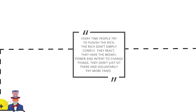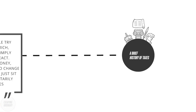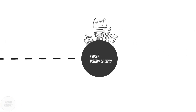A brief history of taxes. Every time people try to punish the rich, the rich don't simply comply — they react. They have the money, power, and intent to change things. They don't just sit there and voluntarily pay more taxes. You may have heard the saying: nothing is certain except death and taxes. But for most of human history, taxes were not a certainty at all, and look much different to the way people are taxed today.